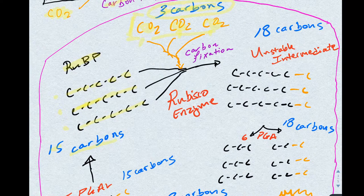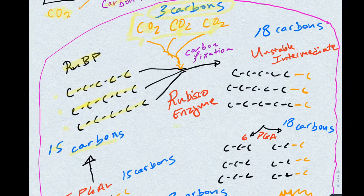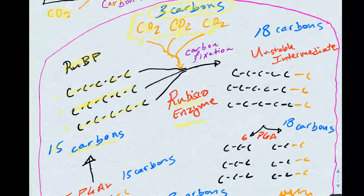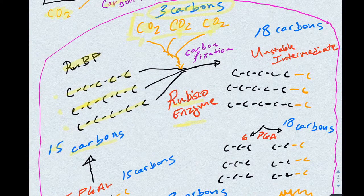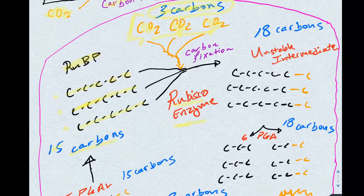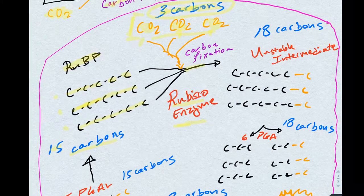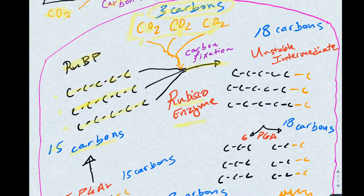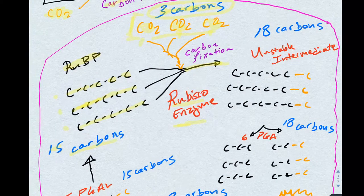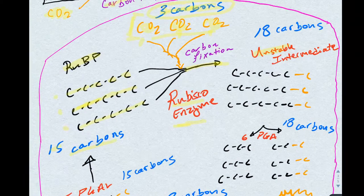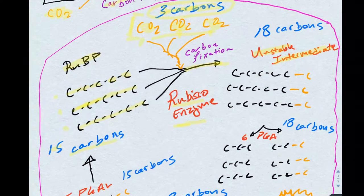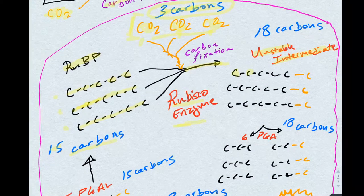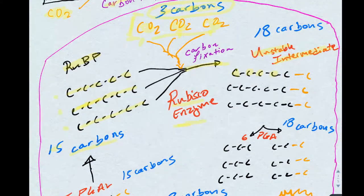The enzyme that does carbon fixation is known as the RU-BISCO enzyme. It takes the carbon from carbon dioxide and attaches it to RU-BP. So, the step that brings us to the fixation of carbon gives us an unstable intermediate that has six carbons on it. Five from the RU-BP and one from the carbon dioxide.